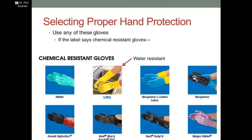When looking at hand protection, you could use any of these gloves if the label says chemical resistant gloves. However, I went to a website that listed all kinds of chemical resistant gloves and they had latex, which is only water resistant — I wouldn't consider it chemical resistant at all. But you have choices: nitrile, neoprene, coated latex, butyl, and a wide variety of gloves to choose from.